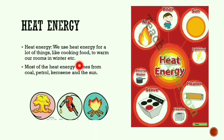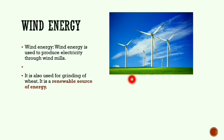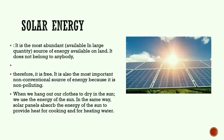Wind energy is used to produce electricity through windmills — these structures are known as windmills. It is also used for grinding wheat. Wind energy is a renewable source of energy since we use wind to produce it.